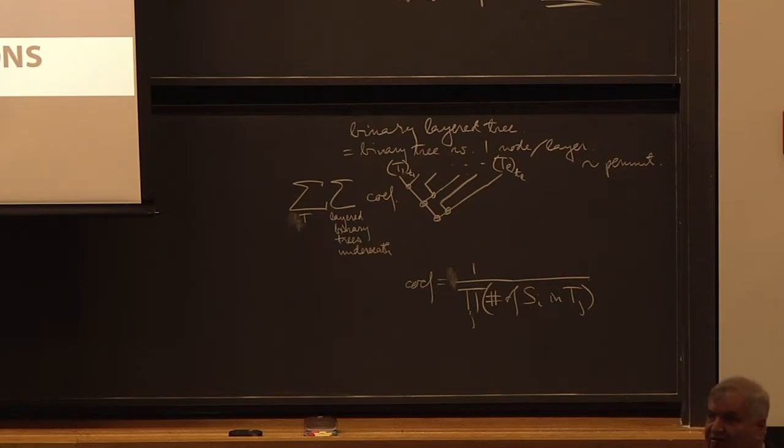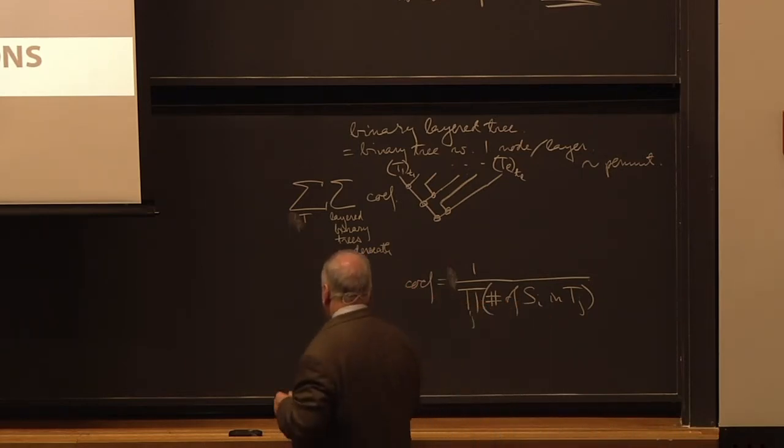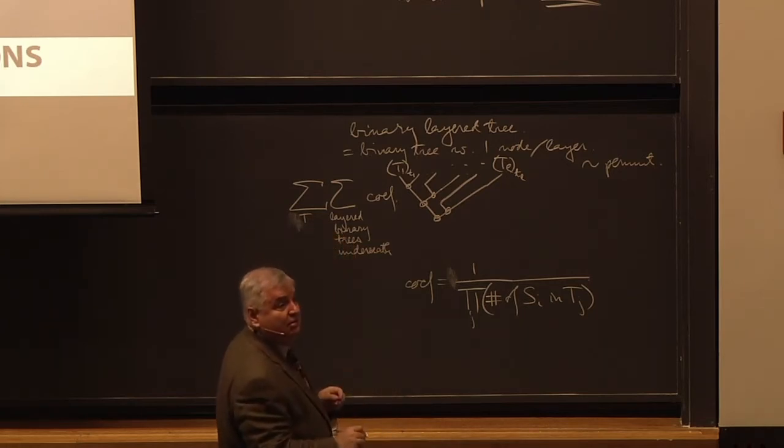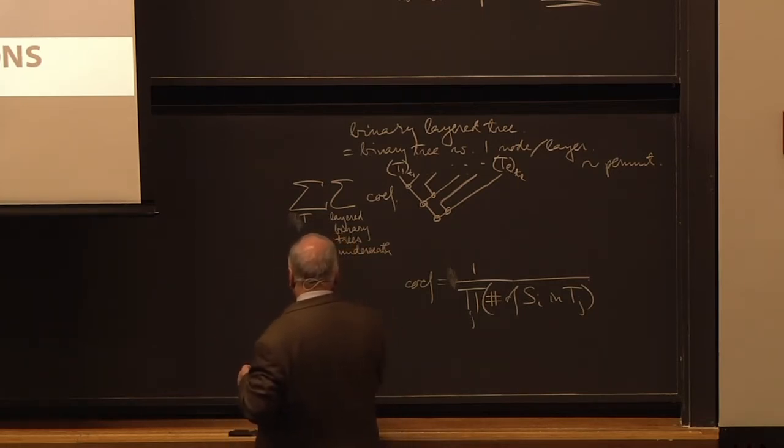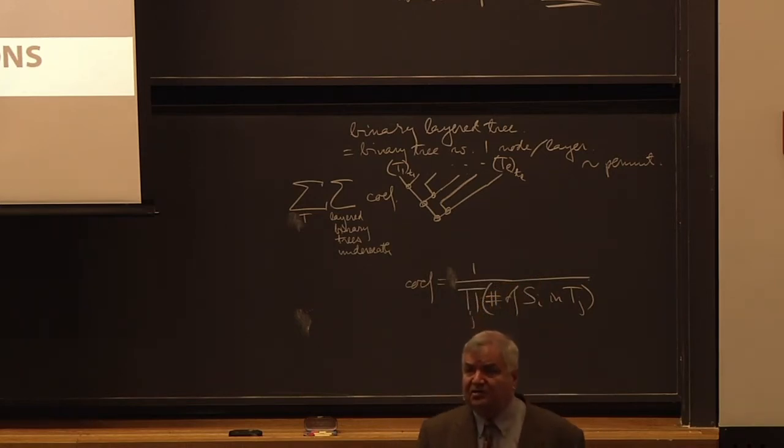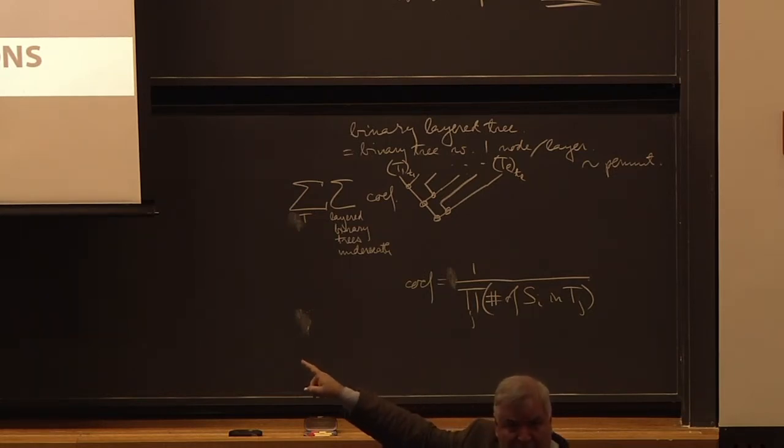Do you see you have a one half and a one half do you see and there's a one third so the coefficient is equal to the lumping number the coefficient is one over the product of over every j of the number of s i's in t j. This is a binary layer three.